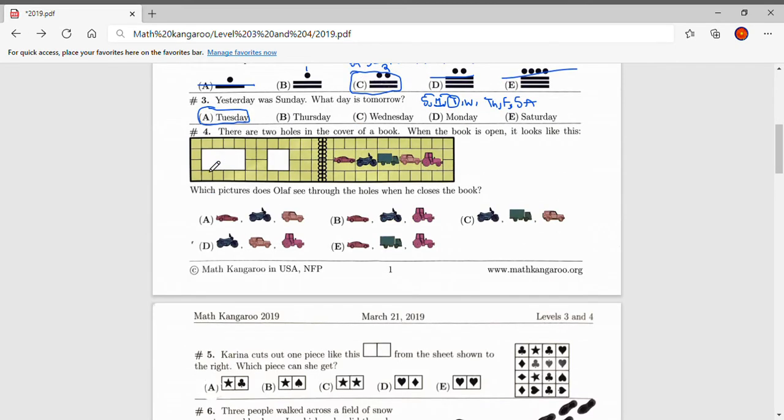Number four. There are two holes in the cover of a book. When the book is open, it looks like this. Which pictures does Olaf see through the holes when he closes the book? So there are three of these shapes separating this spiral area from the first vehicle. So we can cross out one, two, three from the other side and we get that the motorcycle is first. Now there are two of these figures separating the motorcycle from the two next vehicles. So cross out another two and we get the Jeep and the tractor. So the answer for number four would be D because it has the motorcycle, the Jeep, then tractor.